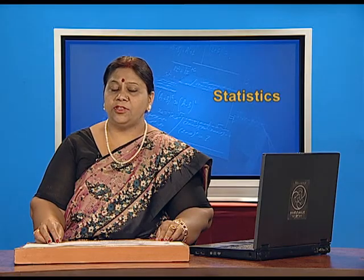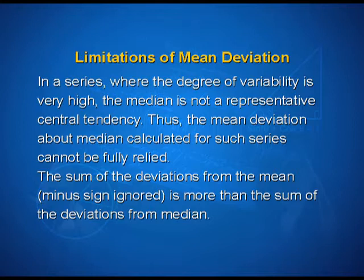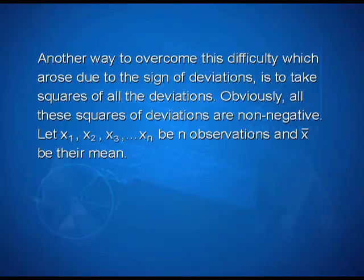Let us discuss the limitations of mean deviation. In a series where the degree of variability is very high, the median is not a representative central tendency. Thus, the mean deviation about median calculated for such series cannot be fully relied upon. The sum of the deviations from the mean (minus sign ignored) is more than the sum of deviations from the median. Another way to overcome this difficulty, which arose due to the sign of deviations, is to take squares of all the deviations.